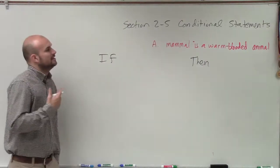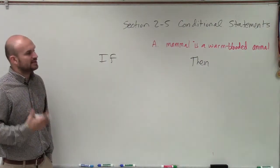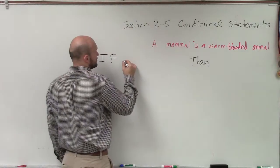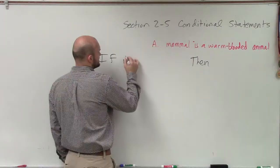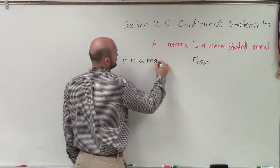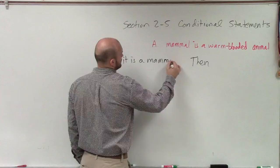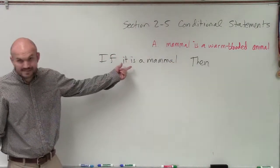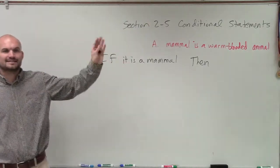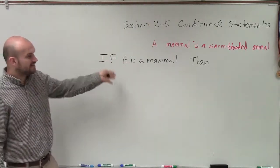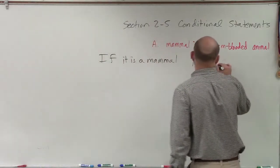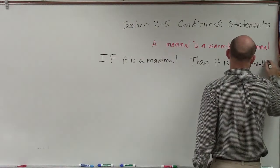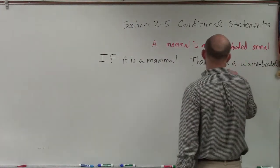So if we have 'a mammal is a warm-blooded animal,' and I was going to think of this conditionally, I would say: if it is a mammal — I added 'it is' in there to kind of make sense — if it is a mammal, then it is a warm-blooded animal.